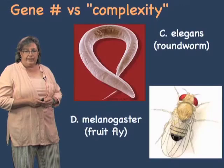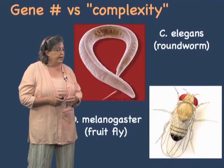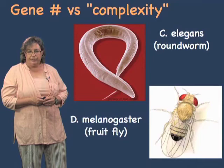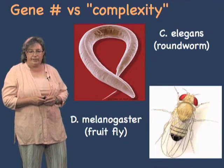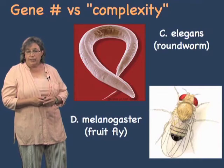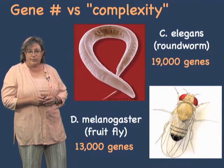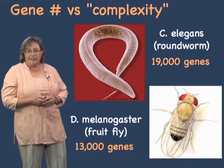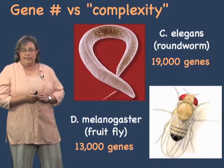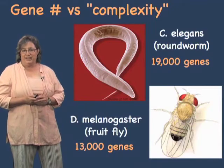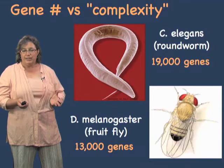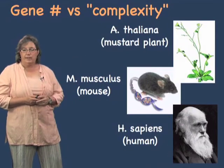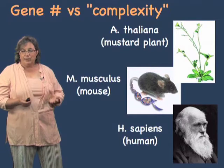Going up the evolutionary ladder, let's consider two other model organisms: C. elegans, the roundworm, and Drosophila melanogaster, the fruit fly. On the surface it might seem that Drosophila is more complicated and would have more genes, but in fact it's the opposite. C. elegans has about 19,000 genes, and Drosophila melanogaster only has about 13,000 genes. So now you have to ask yourself: how much more complicated am I than a fruit fly or a roundworm? How many genes do we expect humans, mice, and even a mustard plant to have?